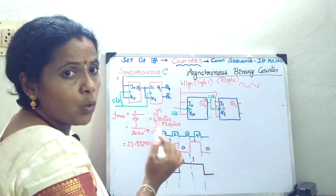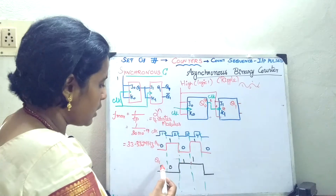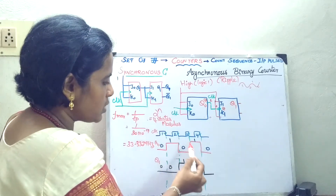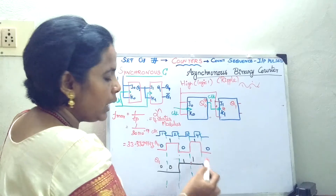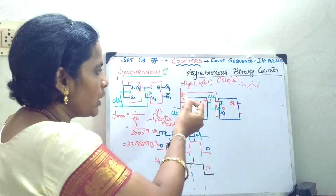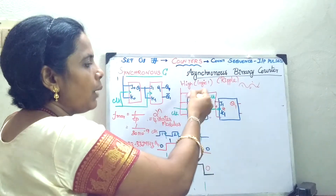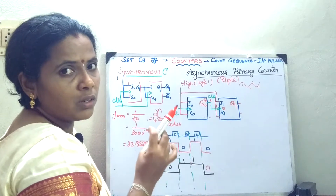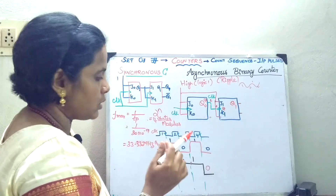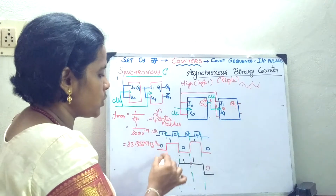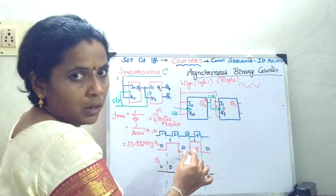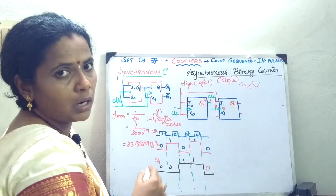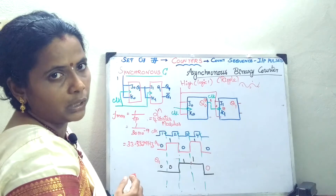You can see how it counts the 4 states: 0-0, 0-1, 1-0, 1-1, and after that it resets to 0. So it can count the 4 states — 0-0, 0-1, 1-0, 1-1. It is called a mod-4 counter, or you can say it as a 2-bit asynchronous counter.